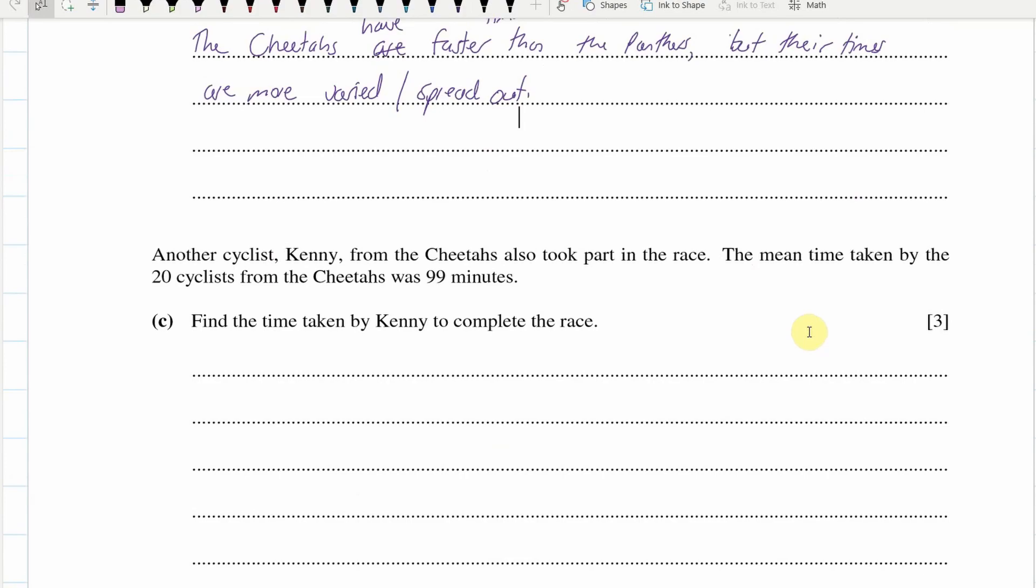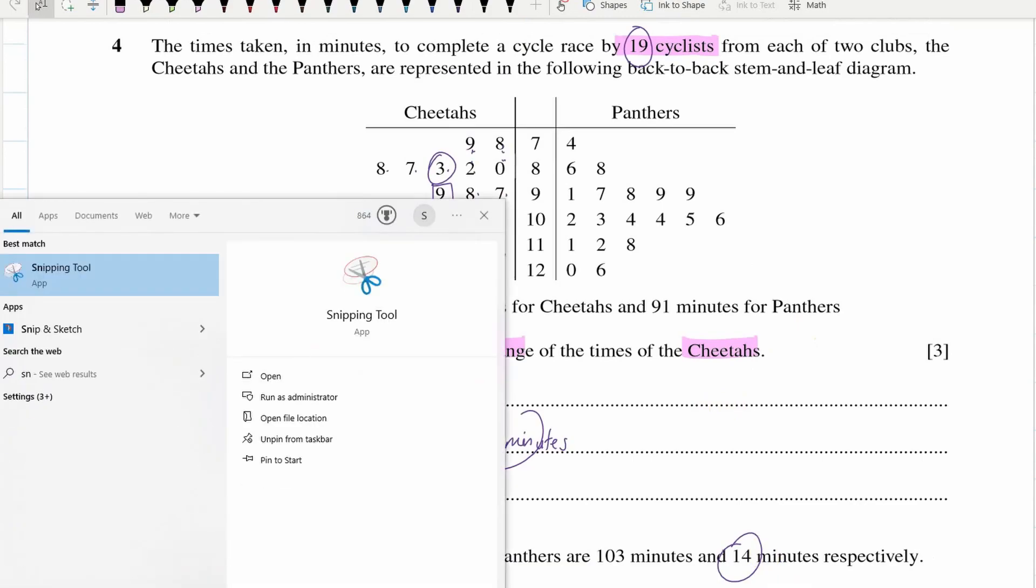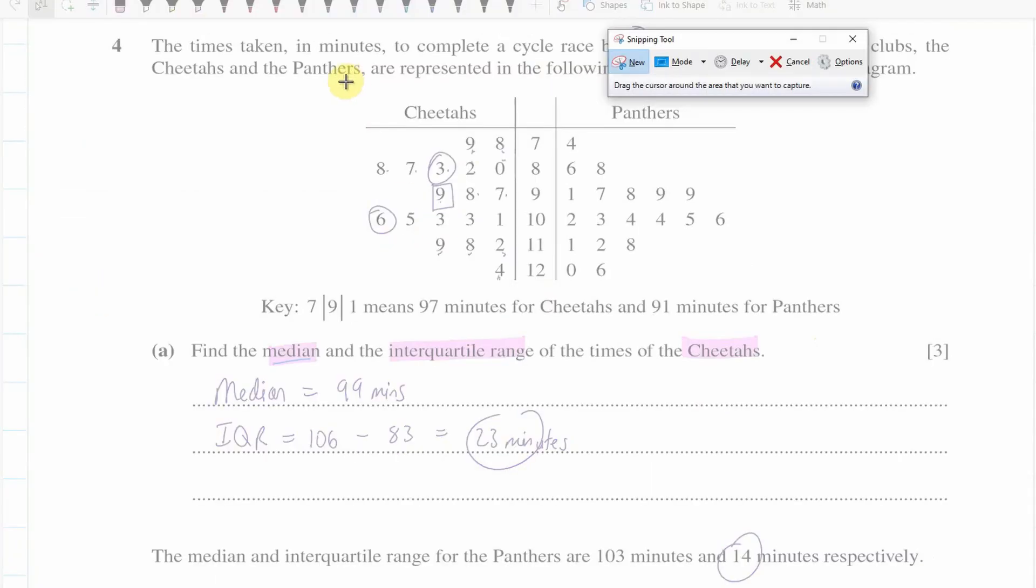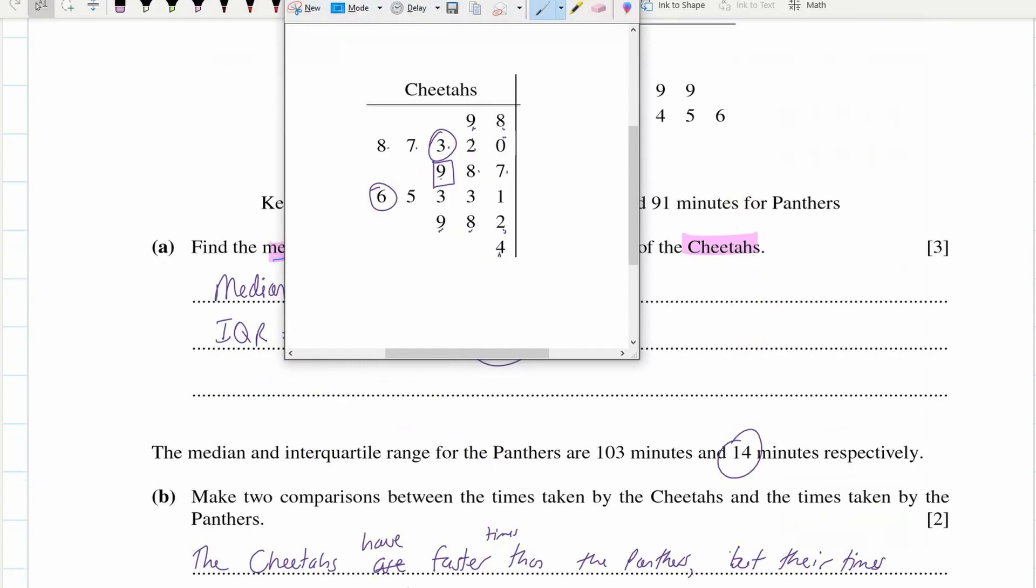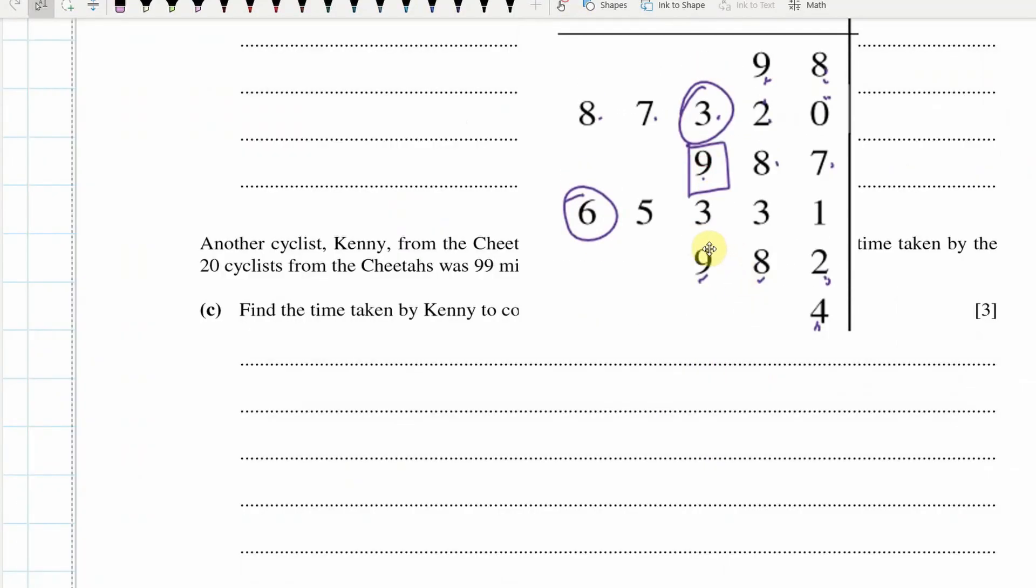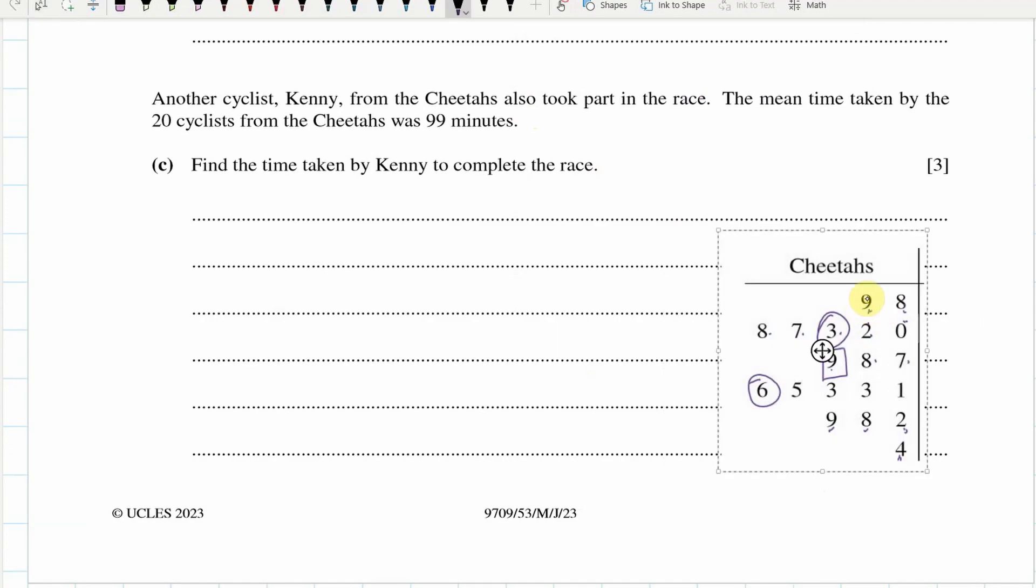Another cyclist, Kenny, good old Kenny, from the Cheetahs also took part in the race. The mean time taken for the 20 cyclists from the Cheetahs was 99 minutes. Okay. So what we're looking at here, maybe we'll just take a snip of this so you can see. So, Kenny's been added to this list, so now there's 20 of them. So, the 20 cyclists have this mean here. So if we go 20 times 99, we get 1980. And this is total time for the 20 cyclists.